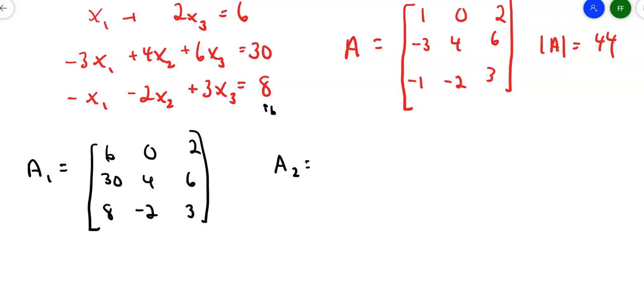Matrix A sub 2 is keep the first column. Keep the 1, negative 3, negative 1. That second column now becomes 6, 30, and 8. And the third column remains 2, 6, and 3.